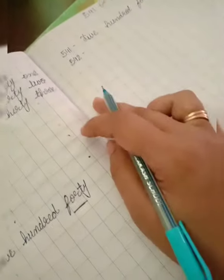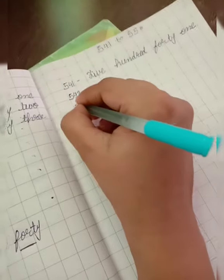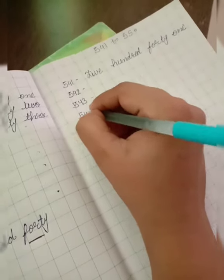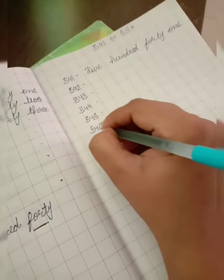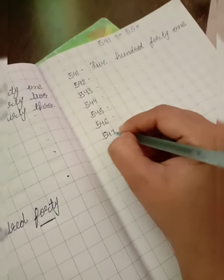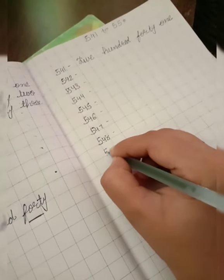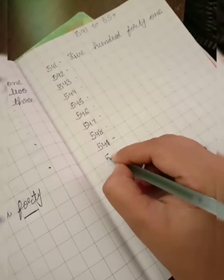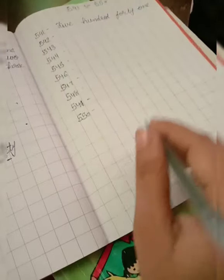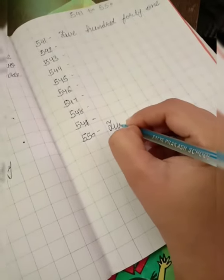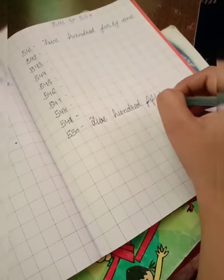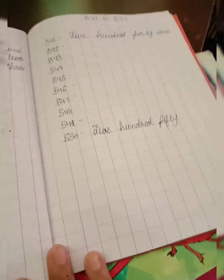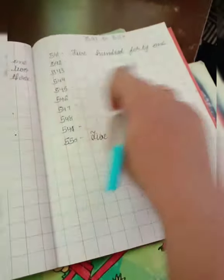Now 542, 543, 544, 545, 546, 547, 548, 549, 550. Ye aap apne aap likh lo. F-I-V-E 5, H-U-N-D-R-E-D 100, F-I-F-T-Y 50. Yahan par aap apne aap sab spellings likh lo.